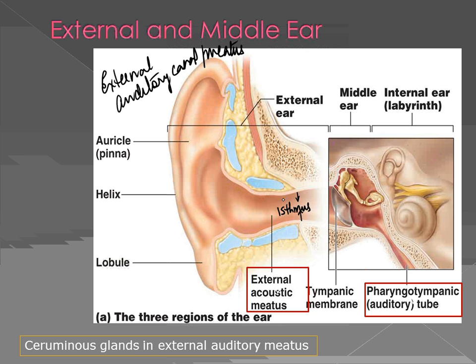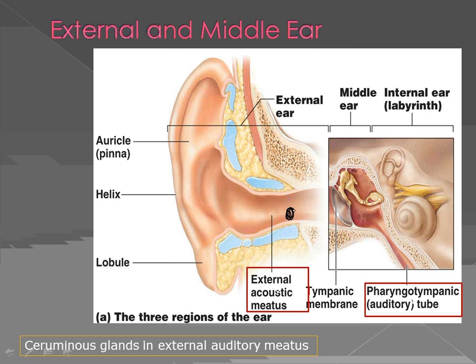Also present in the external auditory canal are modified glands called ceruminous glands, which produce cerumen or wax. Wax has a protective function — it prevents foreign bodies like insects from going in. Sometimes when wax builds up, it can block the whole ear, so that sound waves cannot pass through and the person cannot hear from that ear. This is really just a simple case of removing that wax.